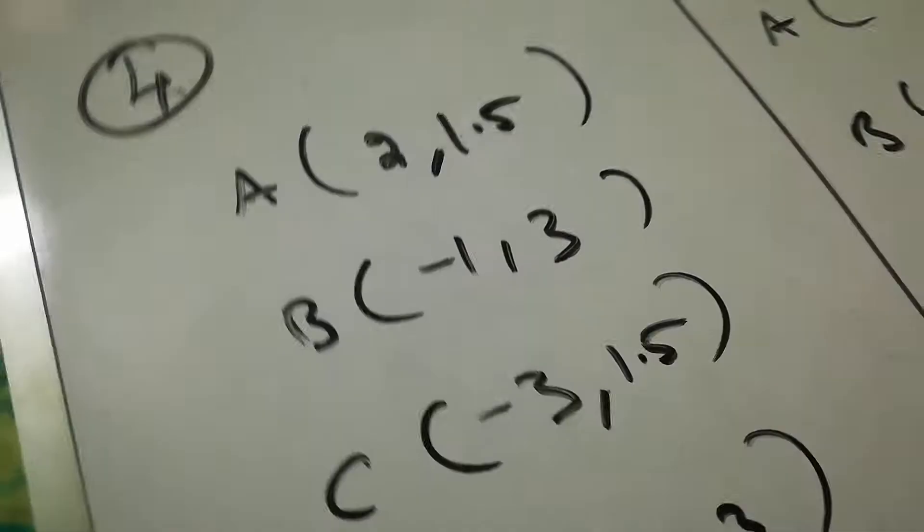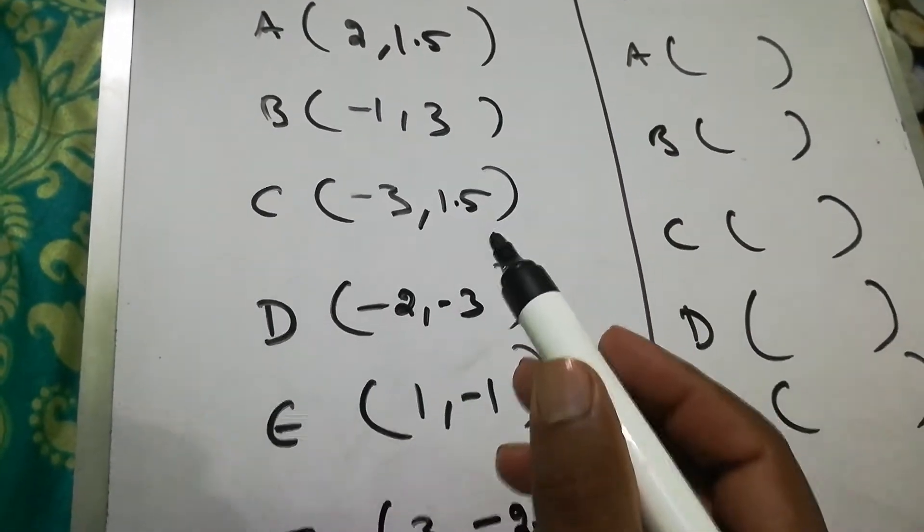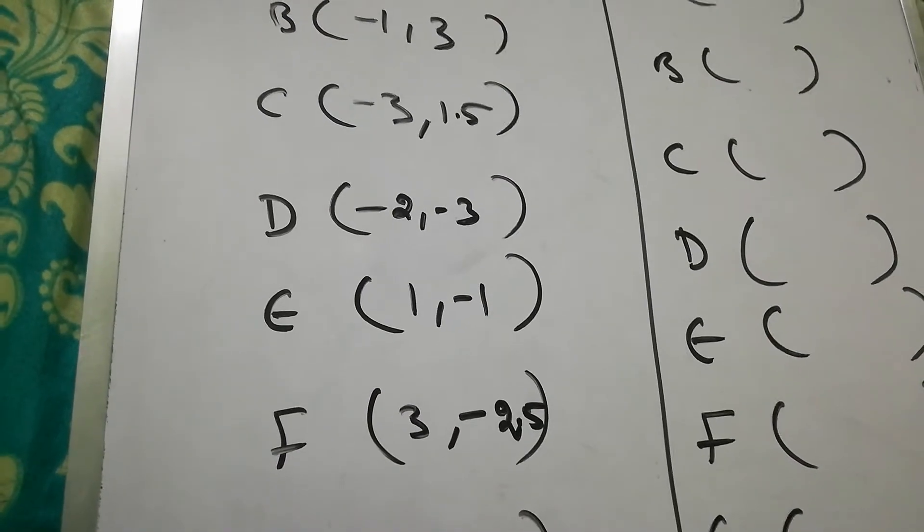You can just write the answers like that: 2, 1.5; minus 1, 3; minus 3, 1.5; minus 2, minus 3; 1, minus 1; 3, minus 2.5.